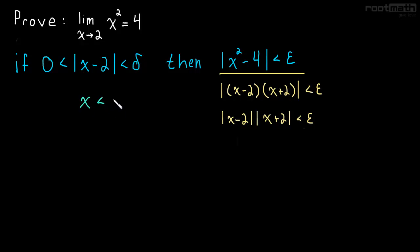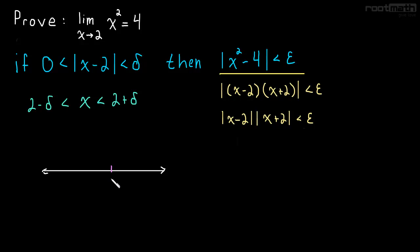x is less than two plus delta, and x is greater than two minus delta. If we were looking on a number line, we'd have two here, and then two plus delta and two minus delta — our little interval there. If delta is really small, all that means is that x is really close to two.